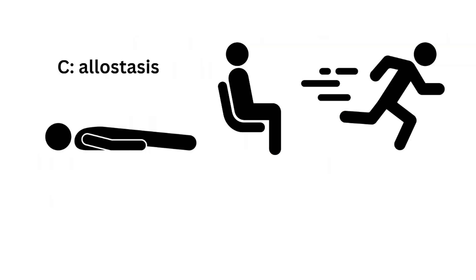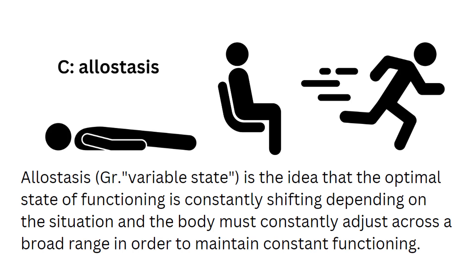And this would be C, allostasis. Allostasis, from the Greek 'variable state,' is the idea that the optimal state of functioning is constantly shifting depending on the situation, and the body must constantly adjust across a broad range in order to maintain constant functioning.